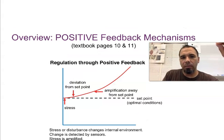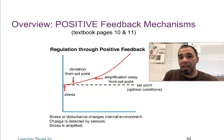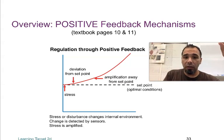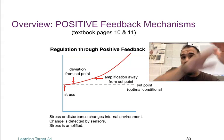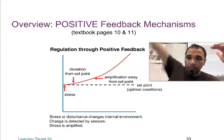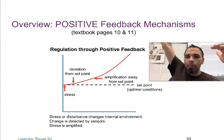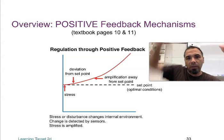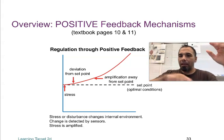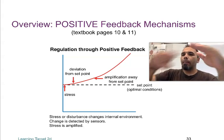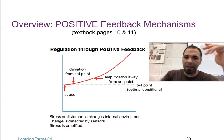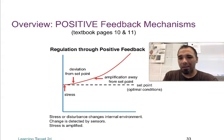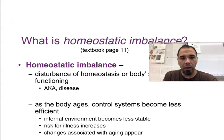Positive feedback, like I said, increases the response. So, if you look at that deviation from the set point — your body temperature starts to go up. Positive feedback is going to keep going up and up and up until it reaches a point where the stimulus is removed. Negative feedback is normal day-to-day. The only two positive feedback mechanisms I need you to know are childbirth and blood clotting.